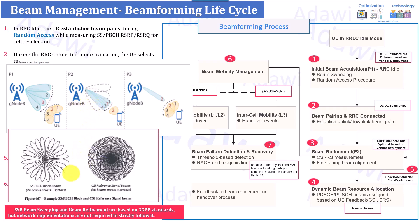During CSI-RS measurement, the gNB can do additional refinement for the initial beams. This is P2, beam refinement: each SSB beam will be refined into four smaller beams related to CSI-RS. So if you have 8 beams in the cell, you will have around 32 CSI-RS beams covering the complete cell — 8 multiplied by 4. This gives narrower beams for the complete site, with three sectors having very small beams, improving accuracy and reducing interference.